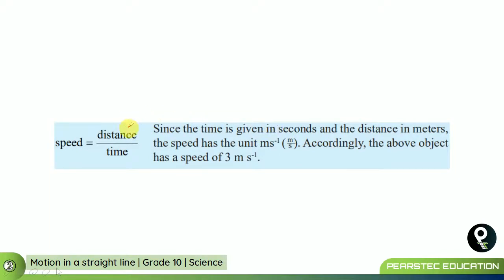Now, distance is measured in meters and time is measured in seconds. Therefore, when you are writing distance, they are writing it as meters per second. Meters per second is the right answer. So, the above object has a speed of 3 meters per second. Lovely.